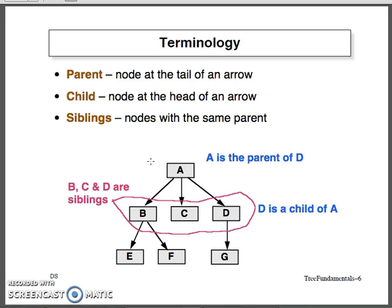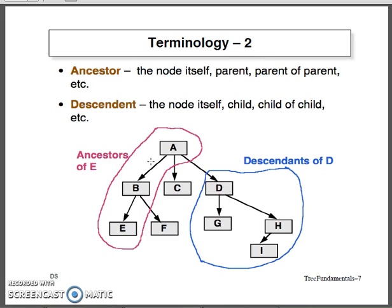We also call B, C, D as siblings. Additionally, there are the concepts of ancestors and descendants. Ancestors means the node itself, its parent, or the parent of the parent. Whereas descendants means the node you are referring to and its children, or the children of children, and so on. In the example, nodes A, B, C or A, B, E are ancestors, whereas nodes D, G, H, I are all descendants, represented in different colors.